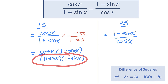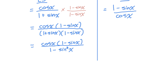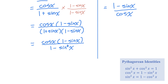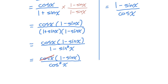Notice in the denominator I created a difference of squares: 1 plus sine times 1 minus sine is equal to 1 squared minus sine squared. And 1 minus sine squared, based on the Pythagorean identity, is equal to cosine squared. In the numerator I have one factor of cosine; in the denominator I have two factors of cosine, so I can cancel out one pair. I'm left with 1 minus sine x over cosine x, which is exactly equal to the right side of this equation. The identity is proven.